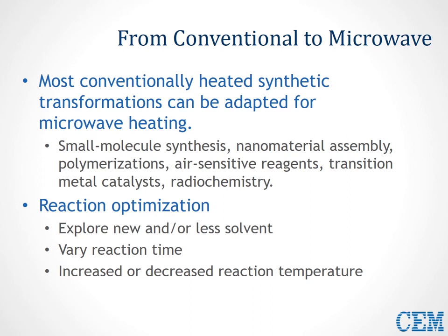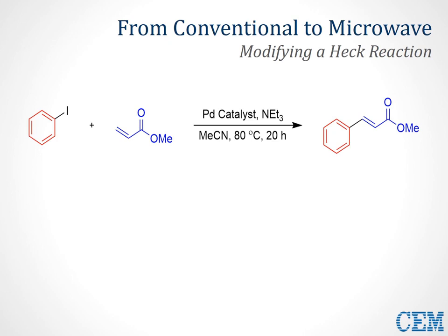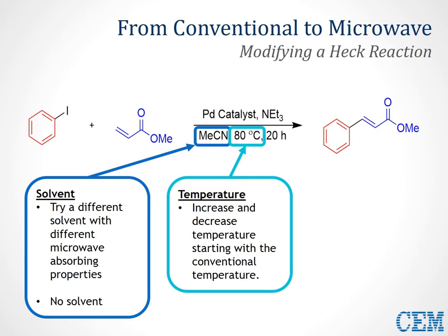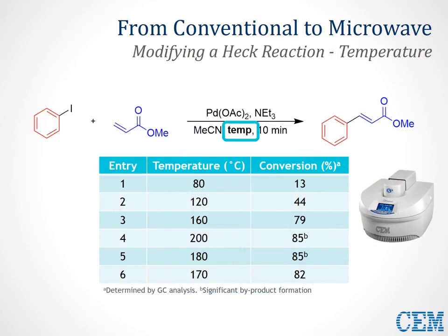How do we optimize current methods to run in a microwave? Reaction optimization is not too difficult — you can explore new solvents or less solvent or even no solvent, and vary reaction time and temperature. To demonstrate, let's look at a Heck reaction with iodobenzene and methyl acrylate. Under conventional heating protocols, the transformation is limited to 80 degrees Celsius — the boiling point of acetonitrile — and takes about 20 hours for completion. Not ideal for a time-constrained undergraduate lab. We have three parameters to work with: solvent, temperature, and time. We can try a different solvent with different microwave-absorbing properties, increase or decrease temperature starting at the conventional temperature, and use a 10-minute reaction time as a starting point while optimizing temperature.